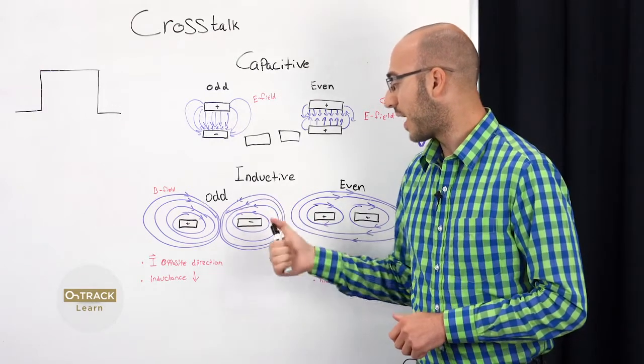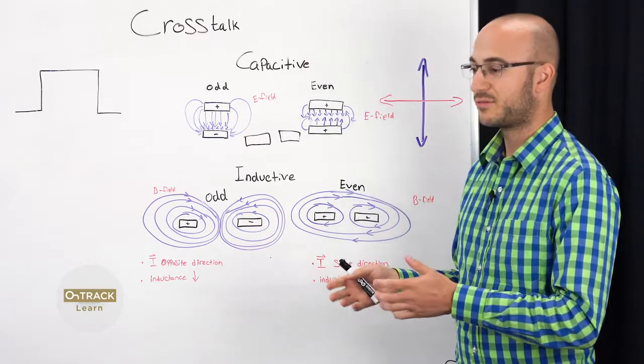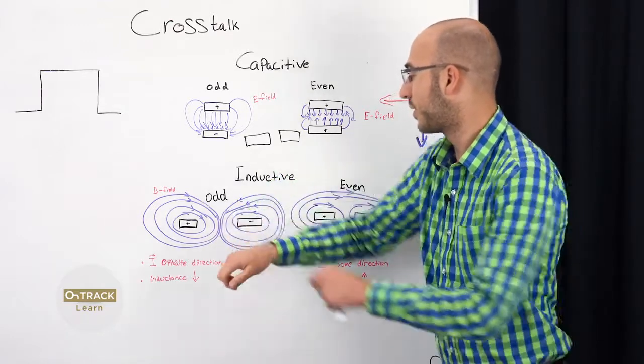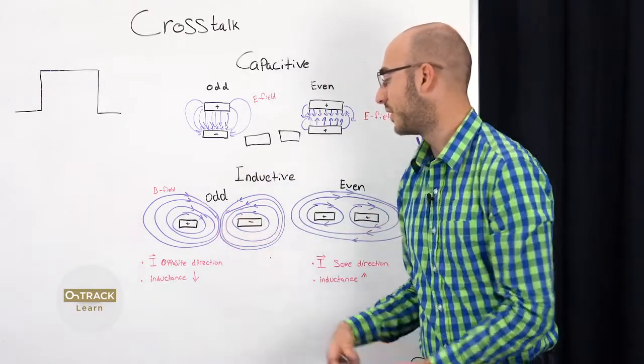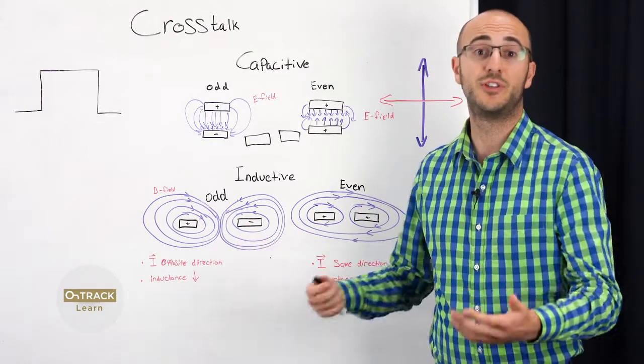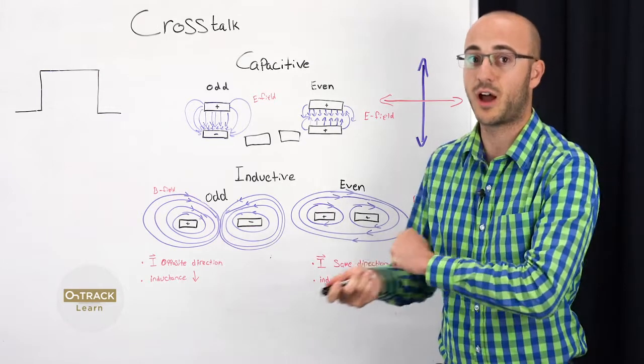And if we go to odd, out of phase, the current is going in opposite direction, and the magnetic field kind of cancels each other out. By using the right-hand rule, you have one going this way, other going this way, and the fields kind of cancel each other out. Which is actually one of the solutions you can implement when routing, is kind of have the signals going in opposite directions.